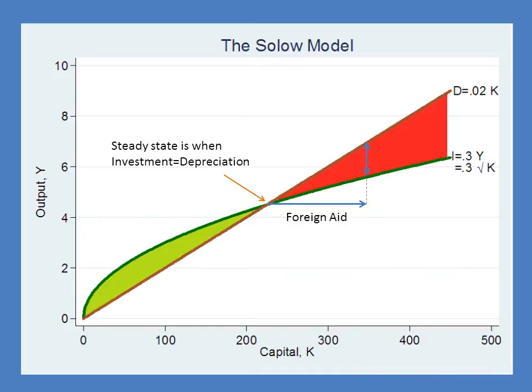The roads will begin to fall apart and they won't be repaired. The factories will begin to break down and there won't be enough savings to fix them. The bridges will start to fall apart. And in many cases, this is exactly what happened. Factories were built in Ghana and they began to fall apart, and no one replaced them. Roads started to crumble. Even the infrastructure left over from the colonial period started to decline. Because of this, countries were pushed back towards their steady state level of capital and their steady state level of GDP. From the Solow model, if you don't improve any of the fundamental factors — organization, technology, investment — an increase in foreign aid is just going to create depreciation and put you back to your steady state.